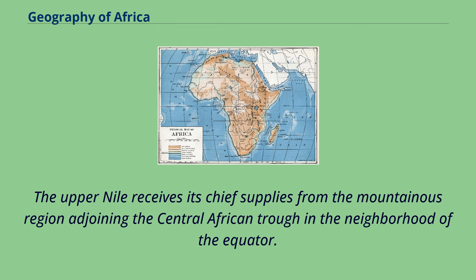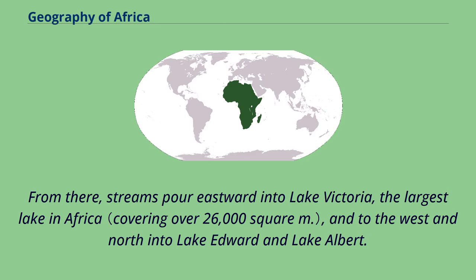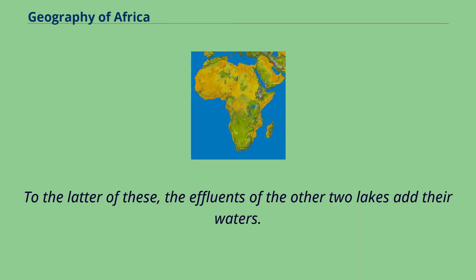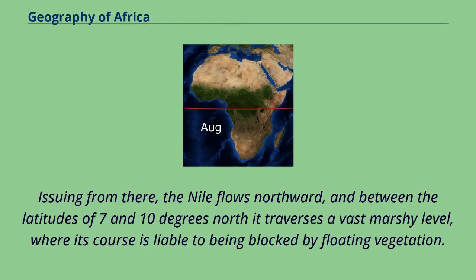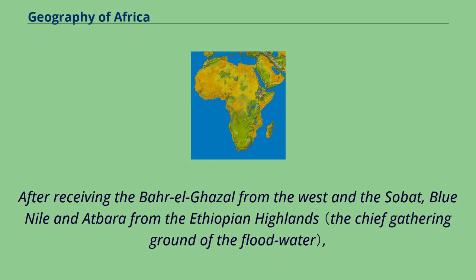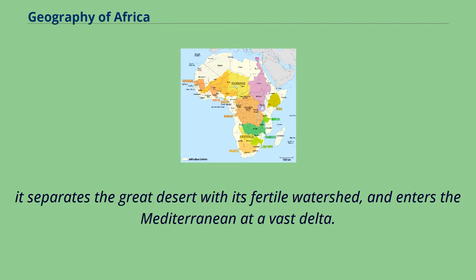The upper Nile receives its chief supplies from the mountainous region adjoining the central African trough near the equator. From there, streams pour eastward into Lake Victoria, the largest lake in Africa, and to the west and north into Lake Edward and Lake Albert. The Nile flows northward, and between the latitudes of 7 and 10 degrees north it traverses a vast marshy level, where its course is liable to being blocked by floating vegetation. After receiving the Bahr el Ghazal from the west and the Sobat, Blue Nile and Atbara from the Ethiopian highlands, it crosses the Great Desert with its fertile watershed and enters the Mediterranean at a vast delta.